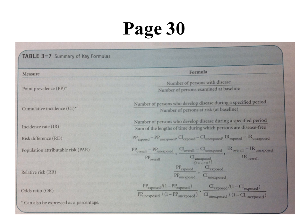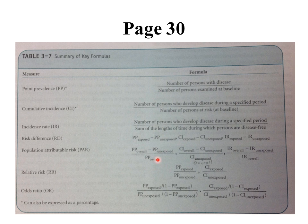The last thing to briefly discuss is Table 3.7 on page 30 of the textbook, which summarizes the key formulas covered in this lesson and chapter: point prevalence, cumulative incidence, incidence rate, risk difference, population attributable risk, relative risk, and odds ratio. These are the same formulas given in this lesson, but I want to mention there is a typo. When calculating the population attributable risk, three formulas are given. The second formula has a typo — the denominator should be the cumulative incidence overall, as opposed to the unexposed. Feel free to use this table when calculating these numbers and doing your homework.